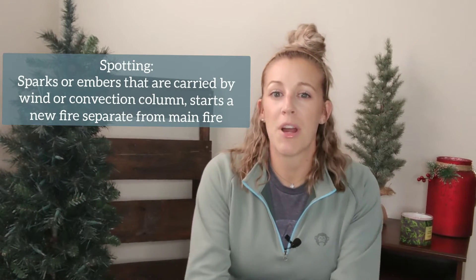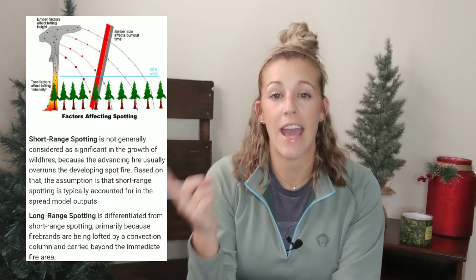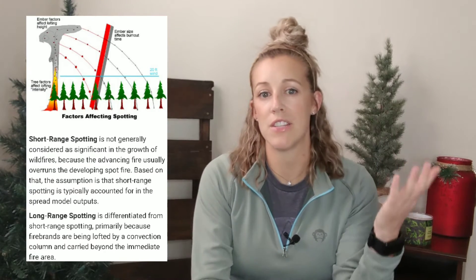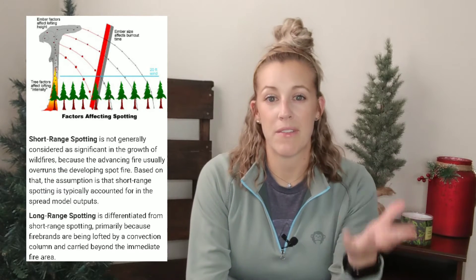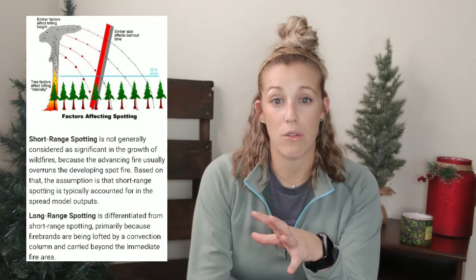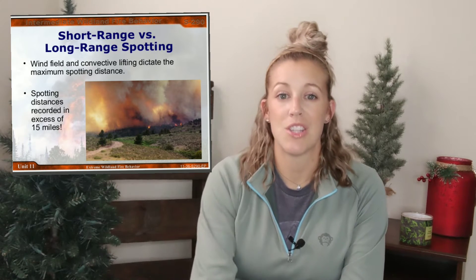The next thing we're going to talk about is spotting. This is where sparks or embers from the main fire get carried by wind or the convection column to start their own fire. There are different categories: short range versus long range. Short range spotting isn't really a big deal because the fire will typically overrun it. However, long range spotting has potential to grow the fire exponentially, so you have to be careful.